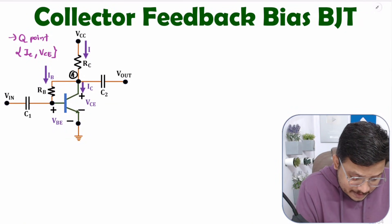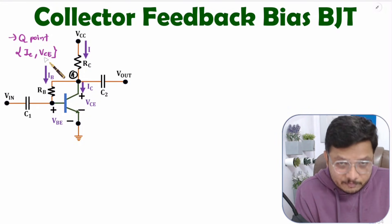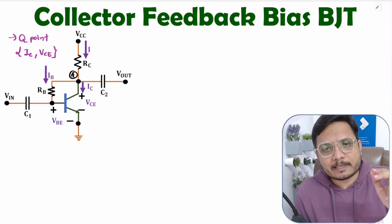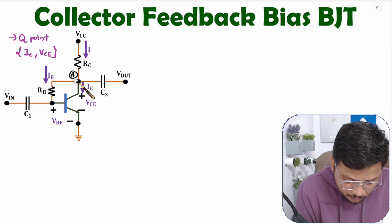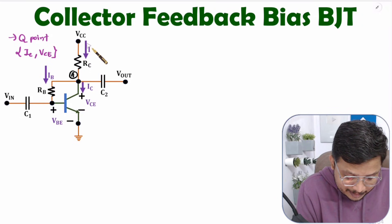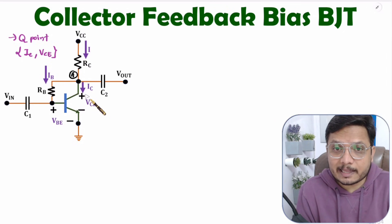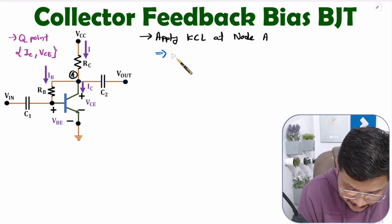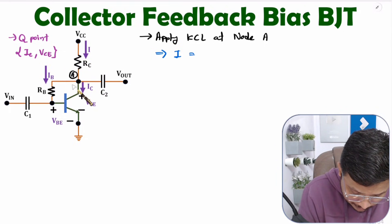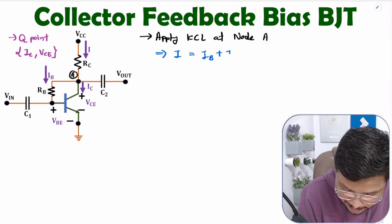Now let me derive the Q-point equations for IC and VCE, and based on that I'll discuss stability. If you observe, we have node A where the entering current is I and the leaving currents are IB and IC. Applying KCL at node A: entering current I equals leaving currents IB plus IC, so I = IB + IC.